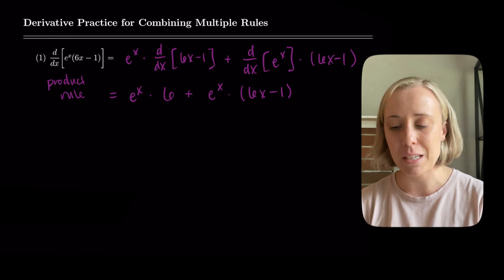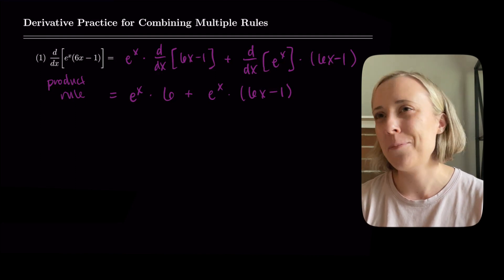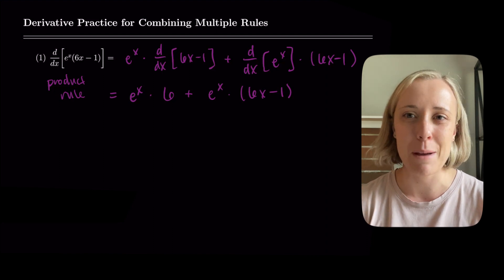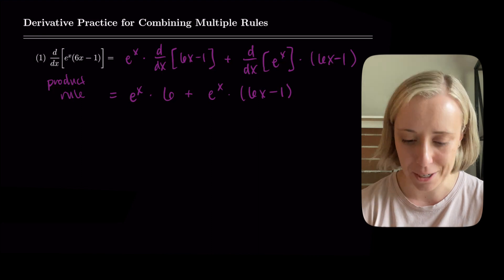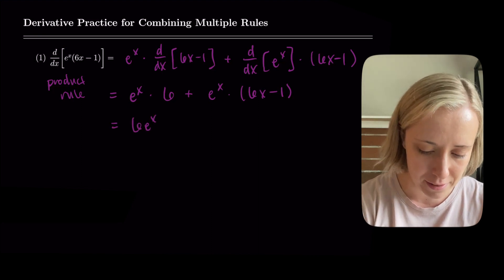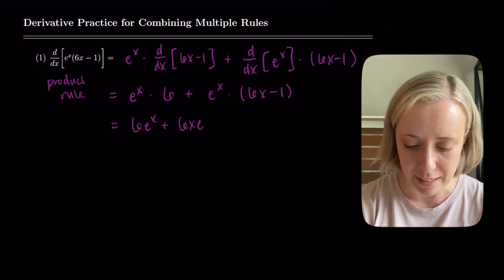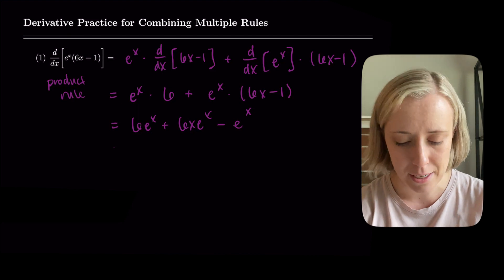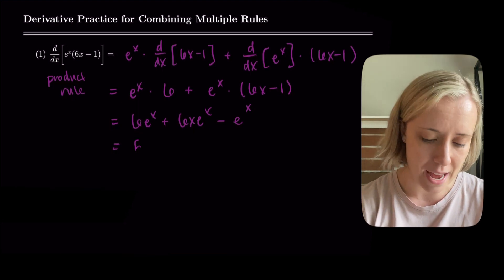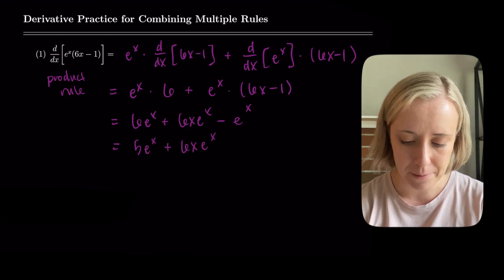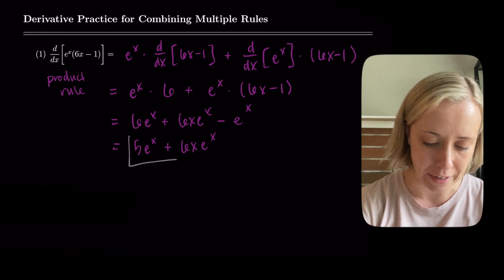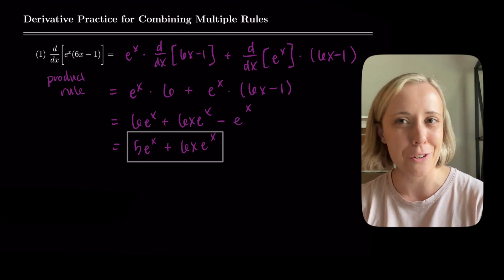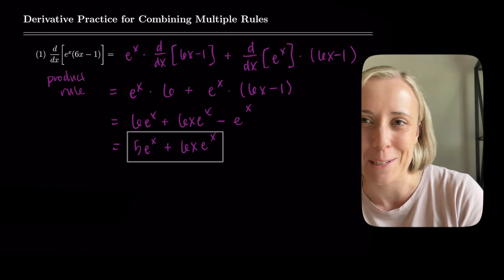Sometimes it's nice to simplify so you can compare with a derivative calculator. Distributing, I get 6e^x, and then distributing the second term gives 6x·e^x − e^x. Combining like terms: 6e^x − e^x = 5e^x, and we still have 6x·e^x. So the final answer is 6x·e^x + 5e^x. That used product rule, power rule on 6x − 1, and the derivative of an exponential.